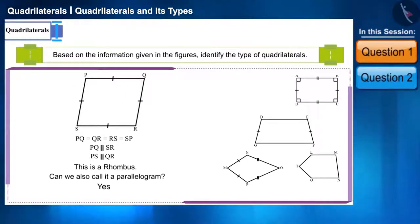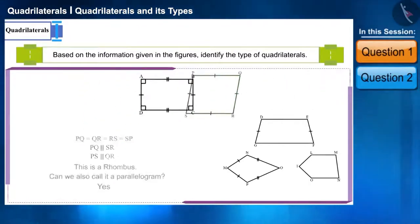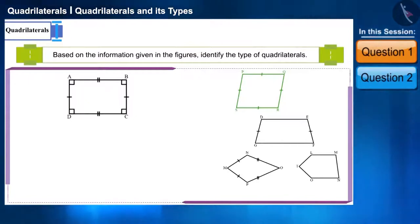Yes friends, because a rhombus is a parallelogram whose all sides are equal. Now look at the second figure. This is a parallelogram ABCD whose opposite sides are equal and each given angle is 90 degrees.